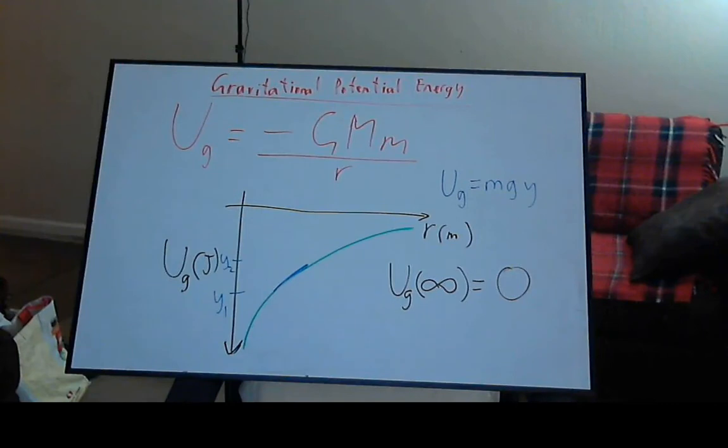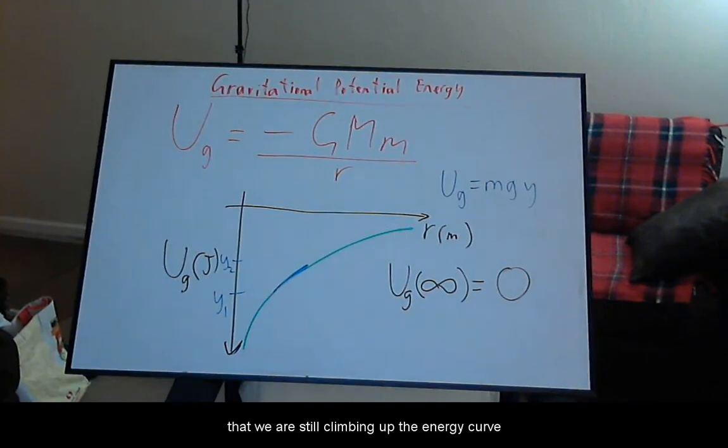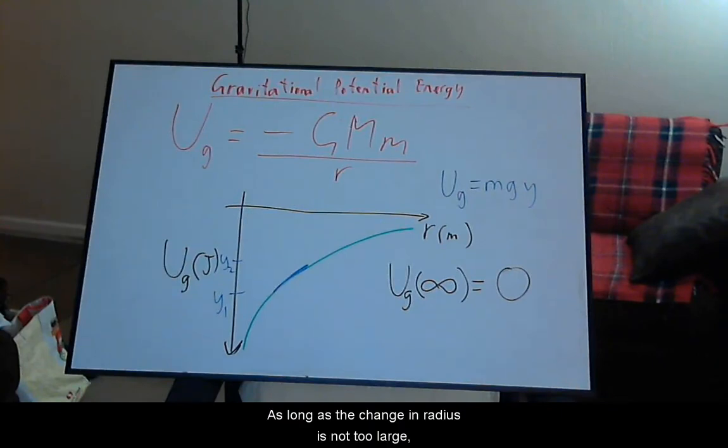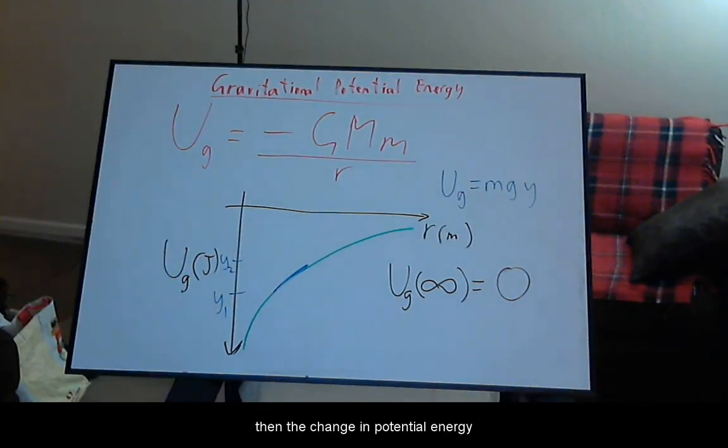Comparing with the traditional linear version of potential energy, notice that we are still climbing up the energy curve with increased radius. As long as the change in radius is not too large, then the change in potential energy can be approximated as linear.